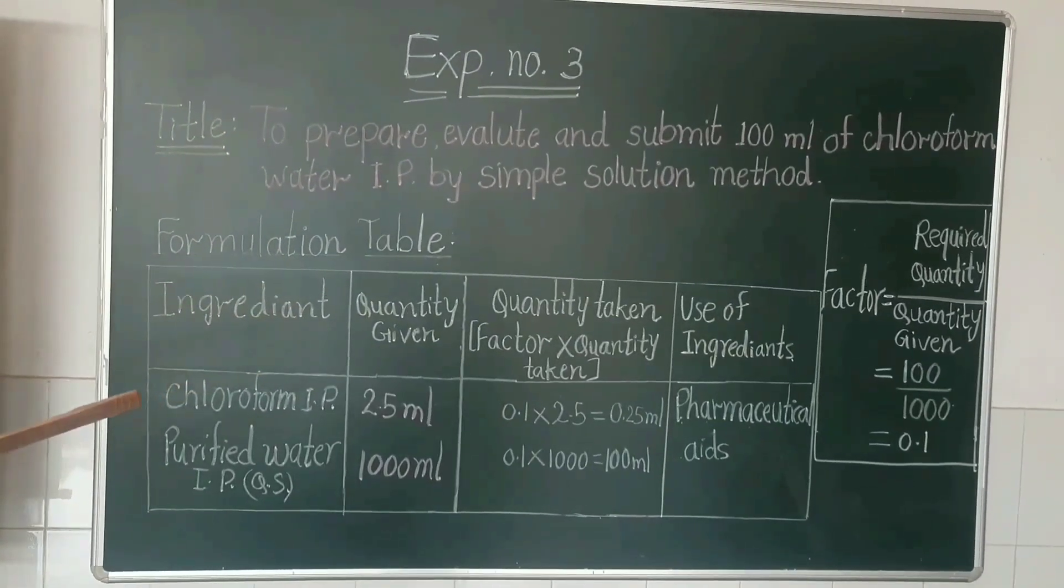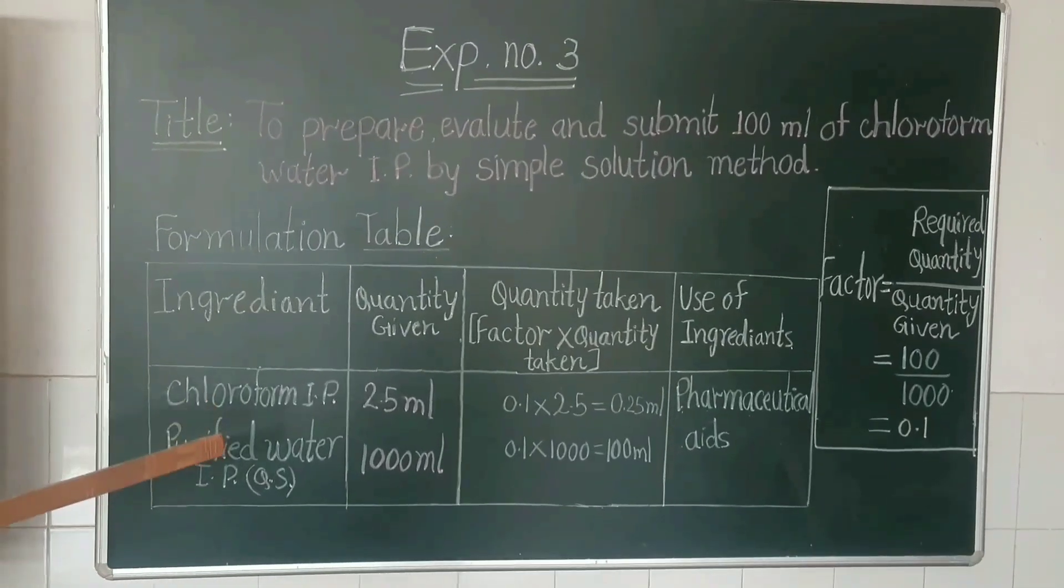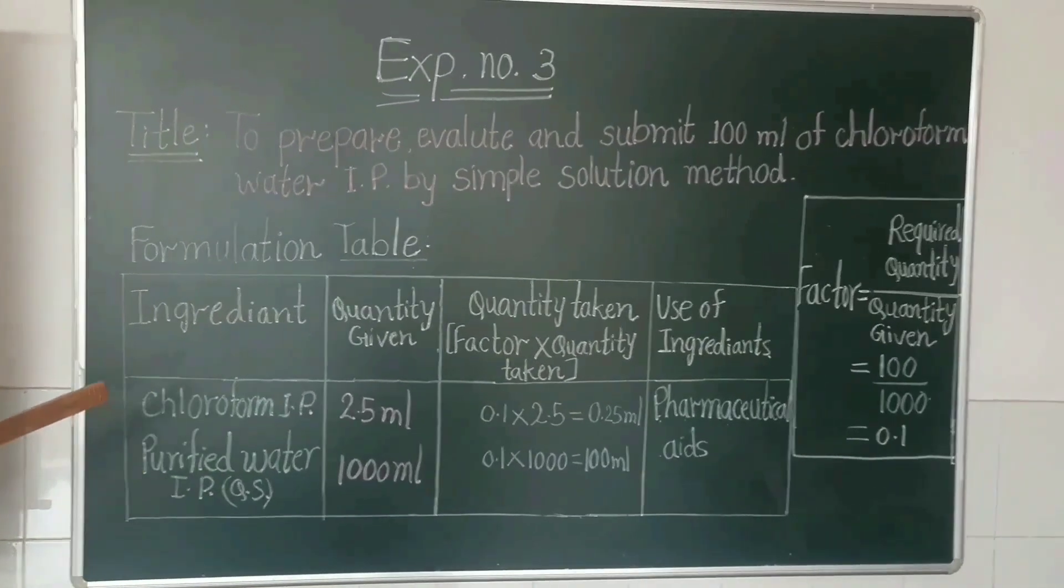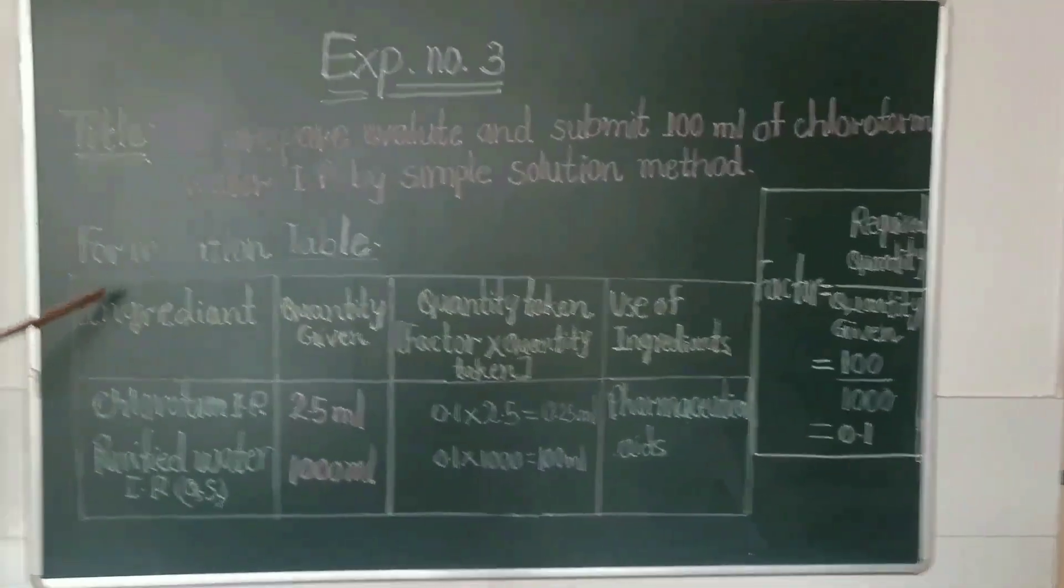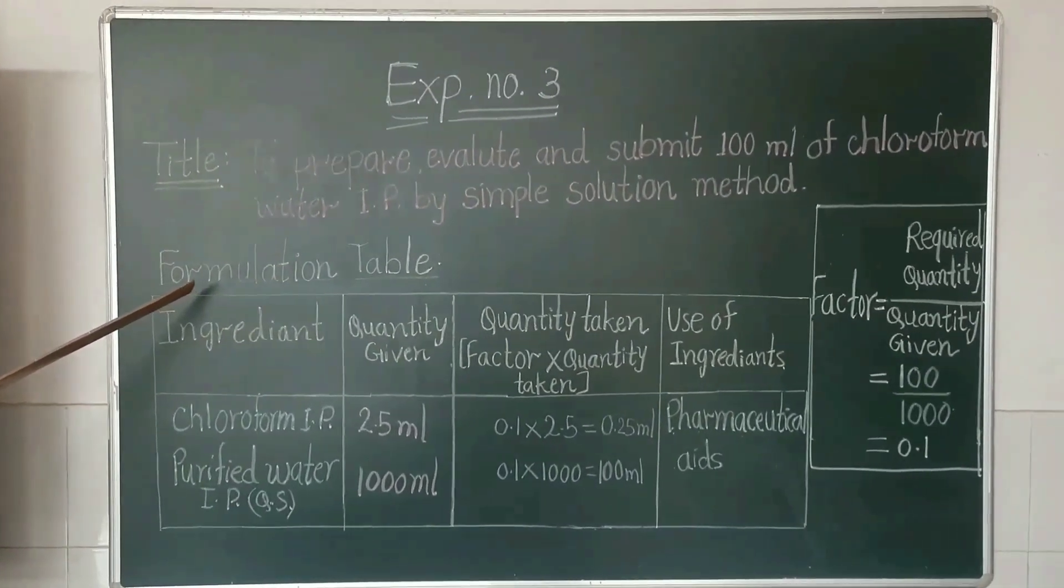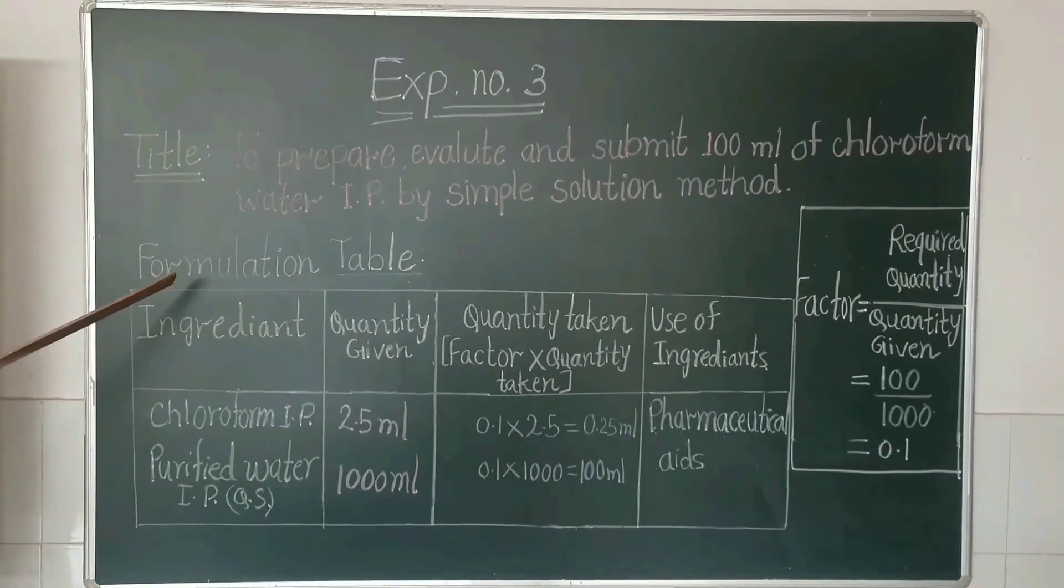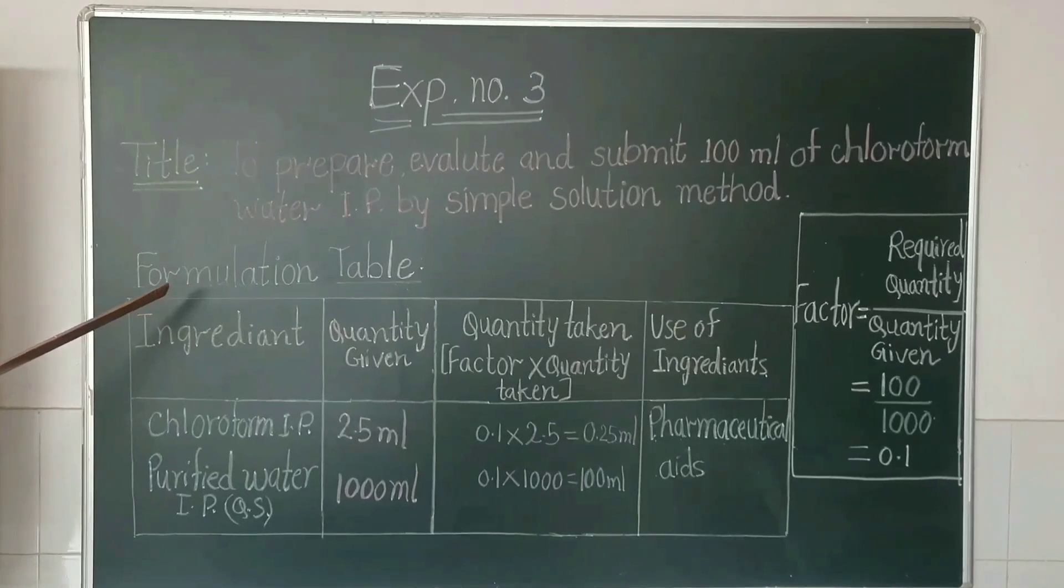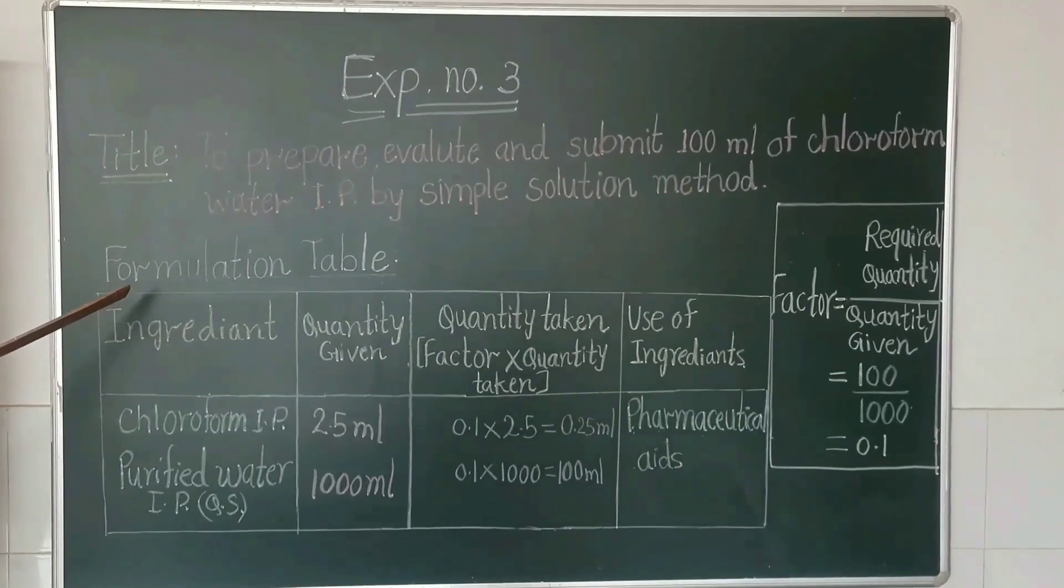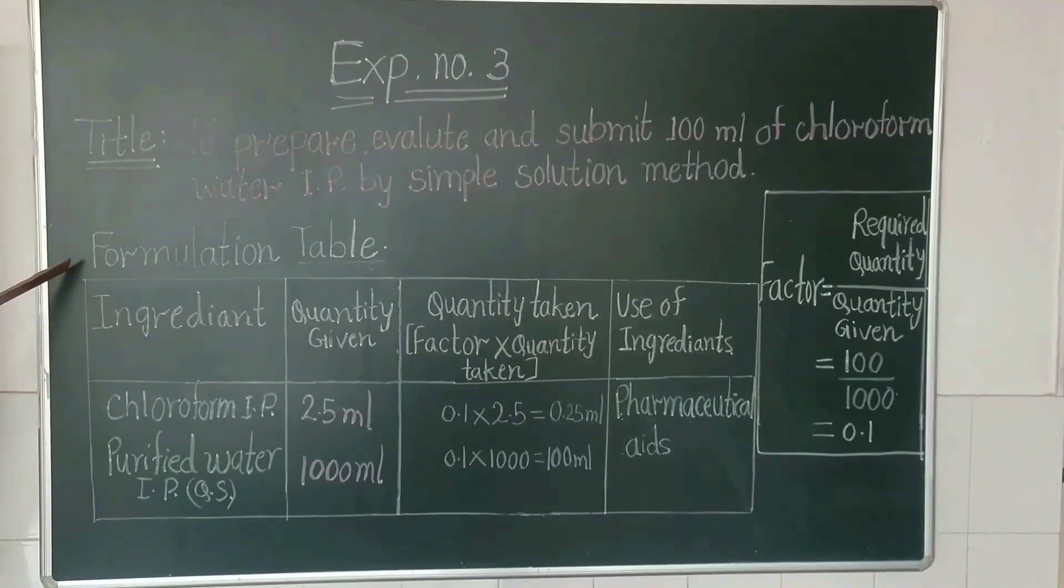Before starting the practical, we need to know what aromatic water is. Aromatic waters are clear solutions saturated with volatile oils, e.g., rose oil, peppermint oil, or other aromatic or volatile substances, e.g., camphor oil. Aromatic waters are of two types: simple aromatic water and concentrated aromatic waters.